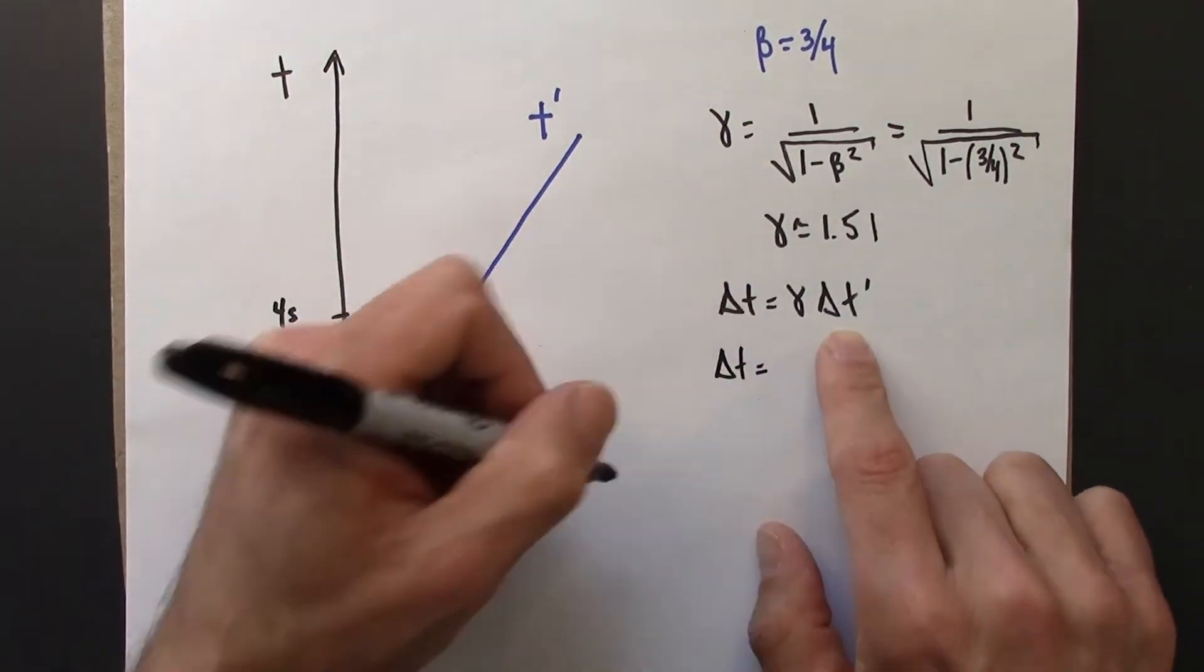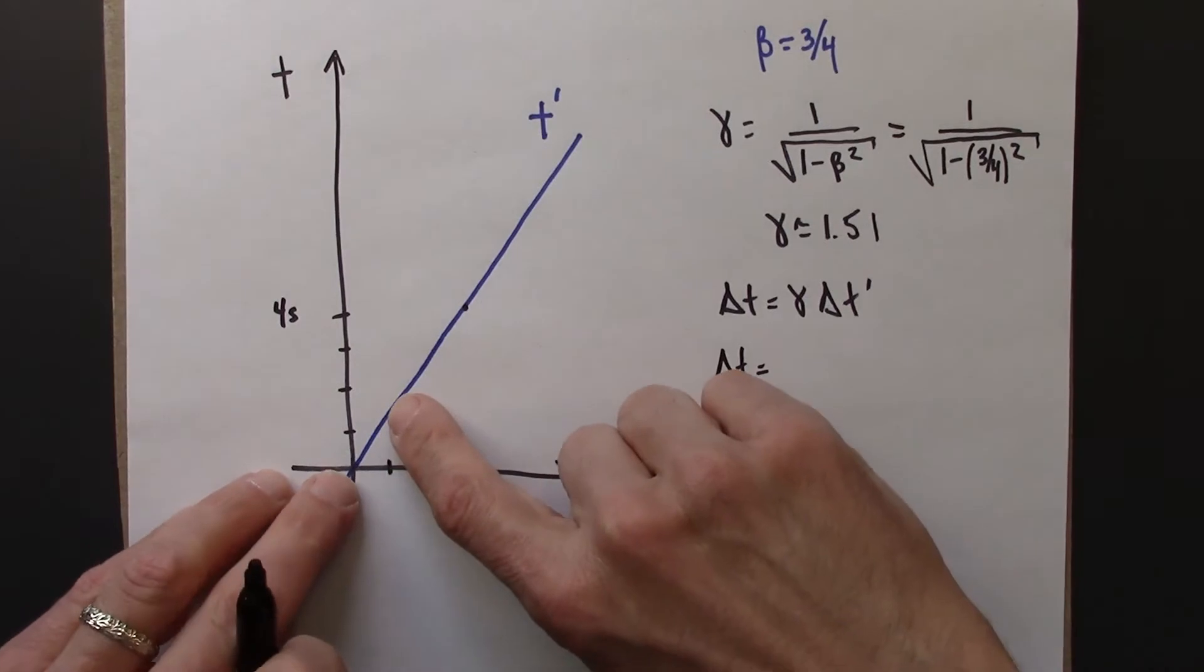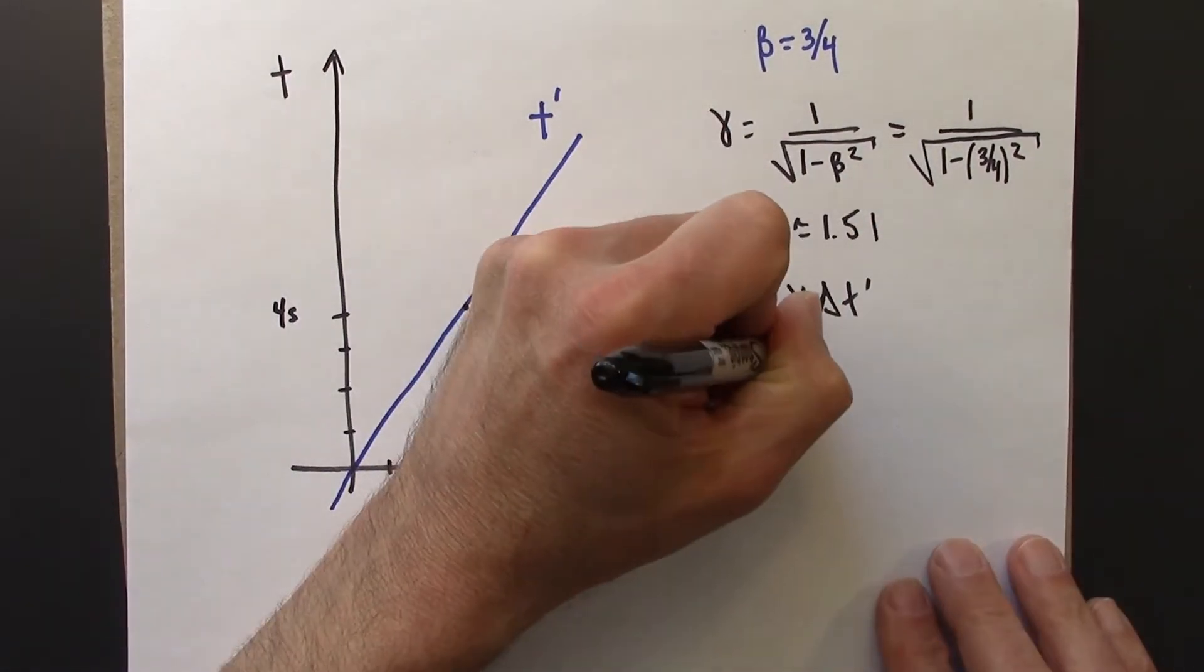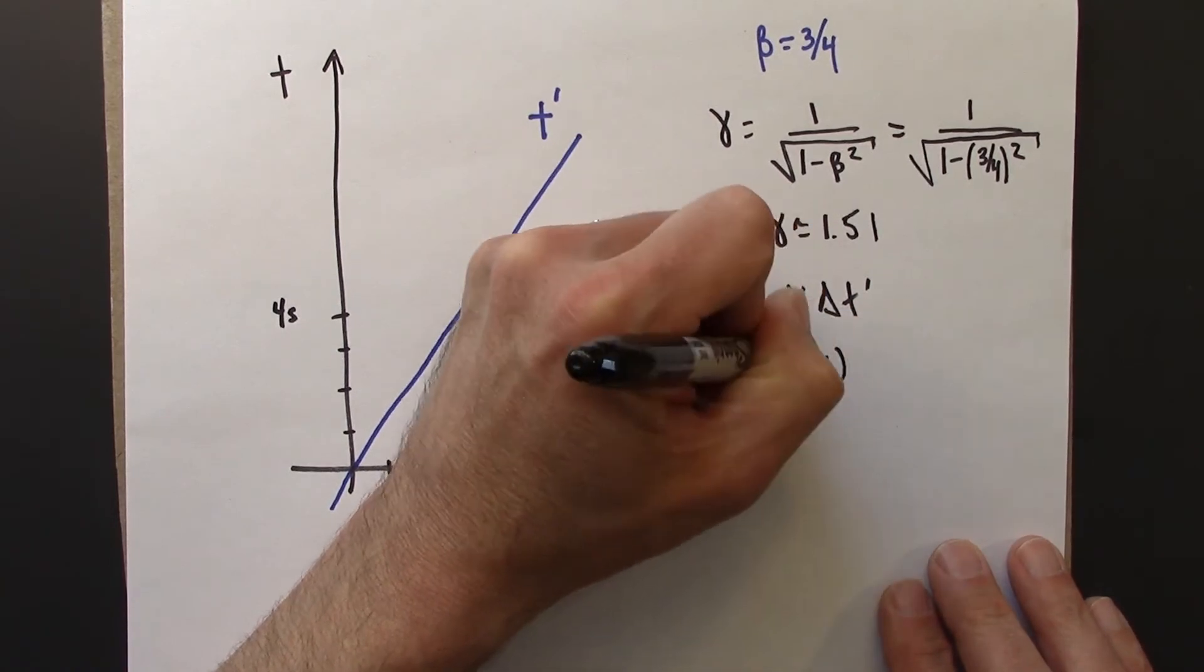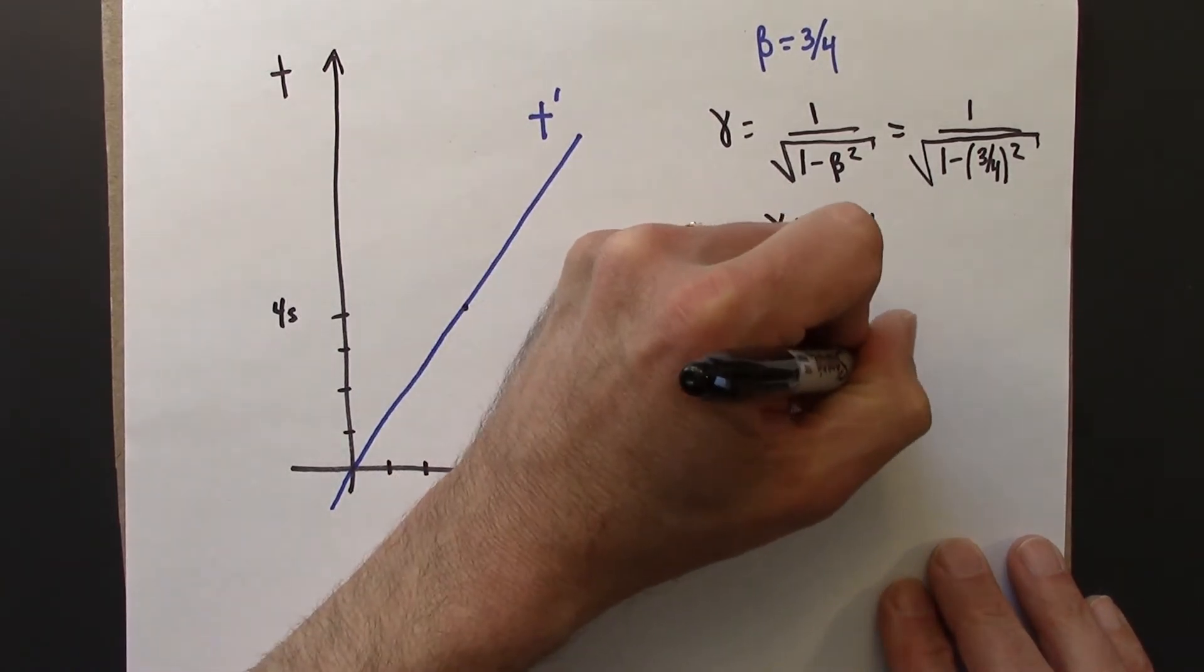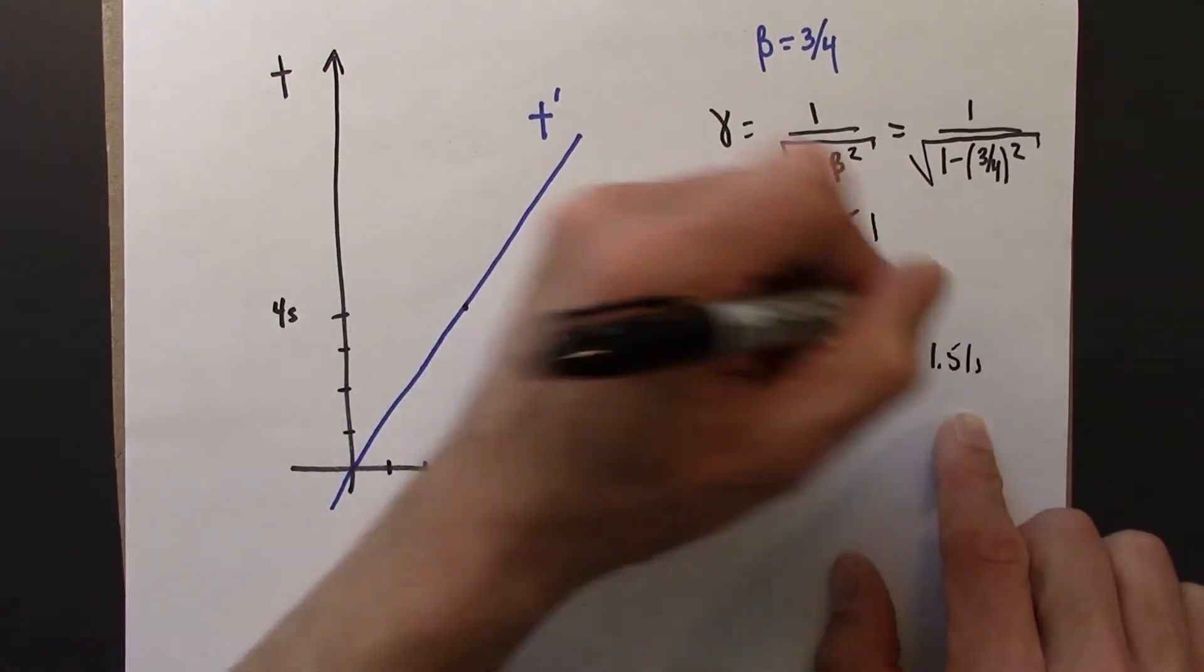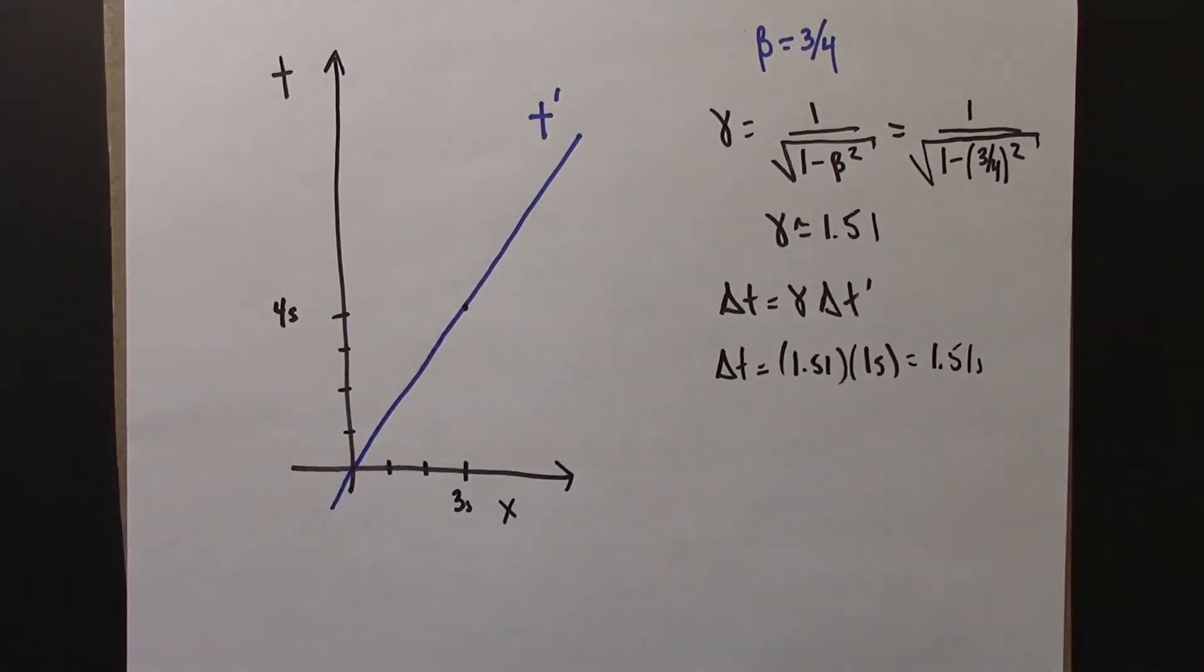Delta t, if delta t prime is 1, if Beowulf is measuring 1 second, I'm just going to plug in 1.51 and 1 second, and that's 1.51 seconds. So that tells me that.